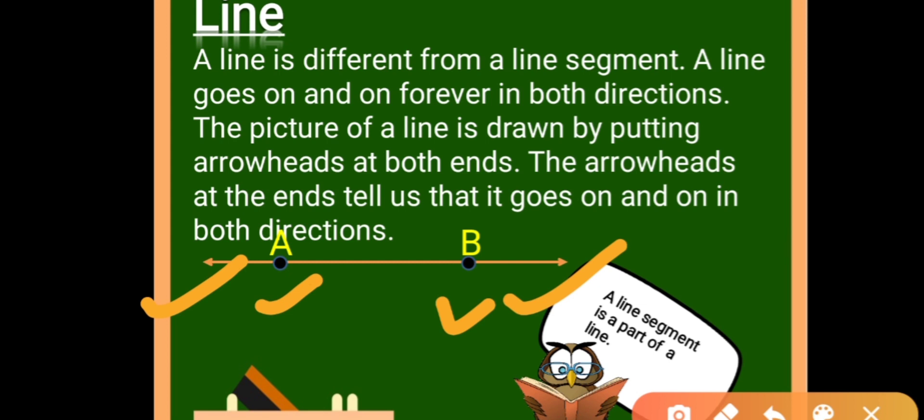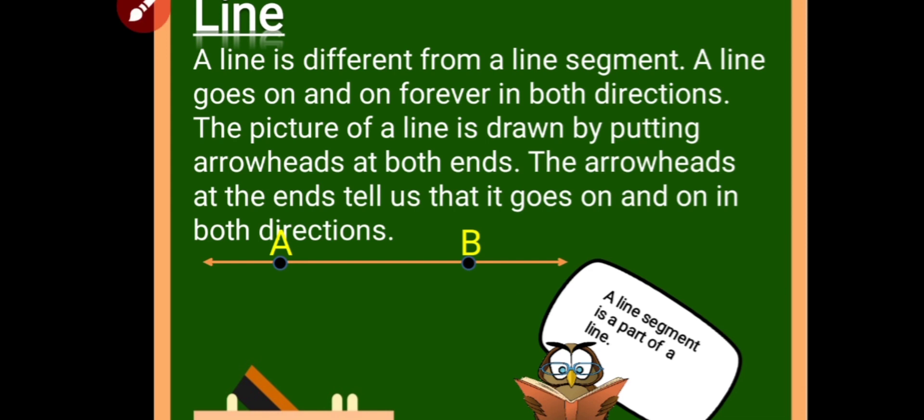A line segment is a part of a line. A line is different from a line segment — it goes on and on forever in both directions. The arrowhead tells us the direction of the line.